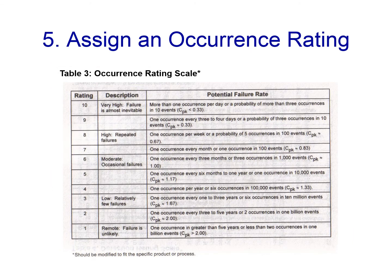The next step is to assign an occurrence rating. This is also a generic measure from 1 to 10. A rating of 1 means remote — the failure is very unlikely or very rare. A rating of 10 means very high — very likely or very probable. There are shades of this occurrence rating in between 1 and 10.